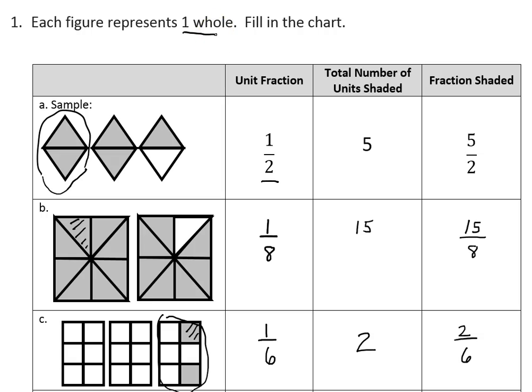So it doesn't matter how many wholes we have, each piece is still one sixth, because it takes six of them to create one whole.